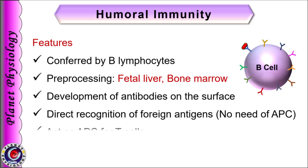B-lymphocytes can directly recognize the antigens and do not require antigen-presenting cells or MHC proteins for their activation. But they do possess class II MHC proteins and hence act as antigen-presenting cells for T-lymphocytes.